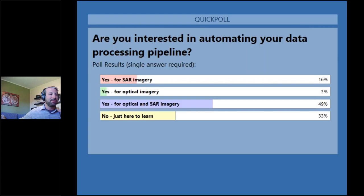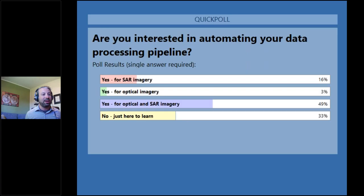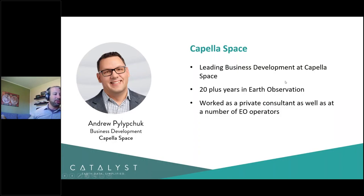Looking at the poll results: 49% stated they are looking at automating a data processing pipeline for optical and SAR imagery — a common sentiment we're seeing these days. 16% said really just for SAR only, which makes sense given this is a SAR-focused webinar. And then a number of you are just here to learn, which is great. We'll now move things forward and introduce our special guest, who is going to showcase some of the many advantages and applications of Capella Space SAR imagery.